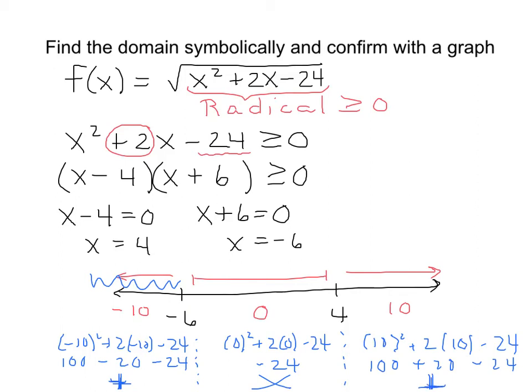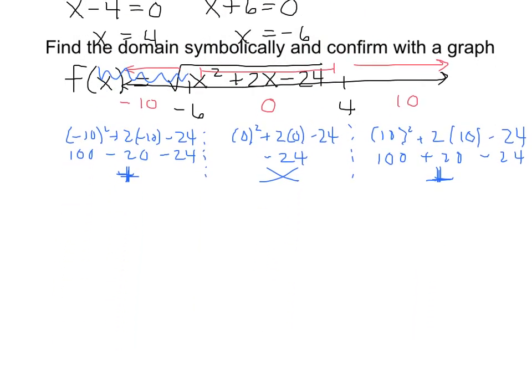So if we put this together, we can conclude that our inequality is true from -∞ up to -6. And because of the equal sign in the problem, we put a bracket and include it. Union, we don't use anything in the middle, but then we pick it up again at 4 with that bracket because of the equal sign and go to infinity.